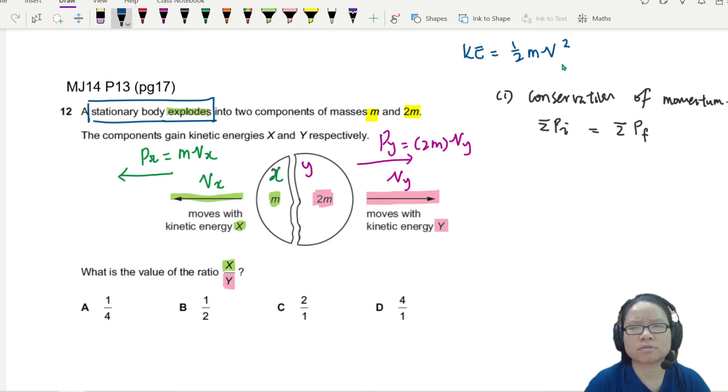So if it's explosion, stationary body explodes. You know how explosion works, right? You set up a firework. You put it on the ground. You run away. The firework chill on the ground. 3, 2, 1, boom. So the initial momentum is 0, because initially it was not moving.